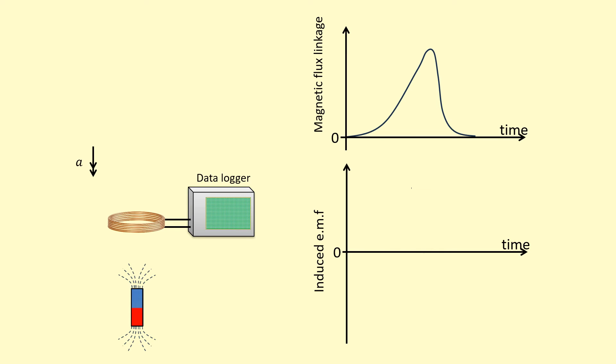and then because it speeds up by the time it's leaving, even despite the repulsive force, it's still going to speed up and leave faster because of weight. The decrease in magnetic flux linkage is quicker, it's a higher rate.